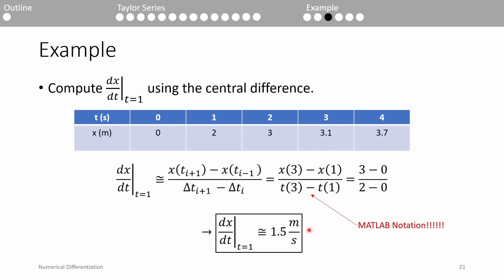Here's an example of the central difference at t equals 1. Now we need both the (2, 3) data point and the (0, 0) data point. Remember that we don't actually use the (1, 2) data point even though we're estimating the derivative there. We do x of 3 minus x of 1 over t of 3 minus t of 1, which gives us 1.5 meters per second. Note that this 1.5 is the average of the estimates from the forward and the backward differences, because the data is equally spaced.